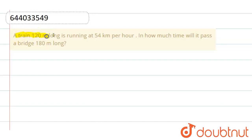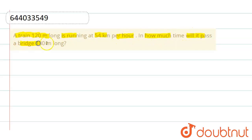Hello friends. The question is: a train 120 meters long is running at 54 kilometers per hour. In how much time will it pass a bridge 180 meters long? So now we know the speed of the train is 54 kilometers per hour.